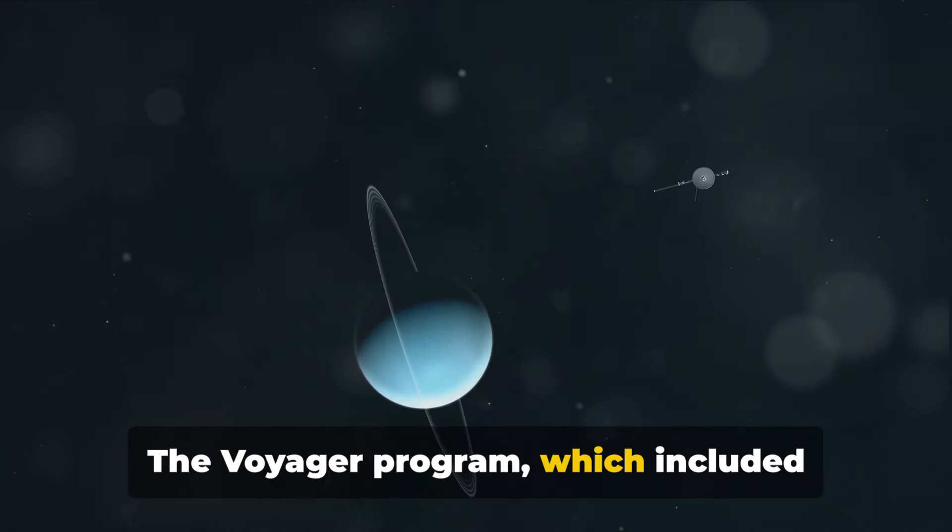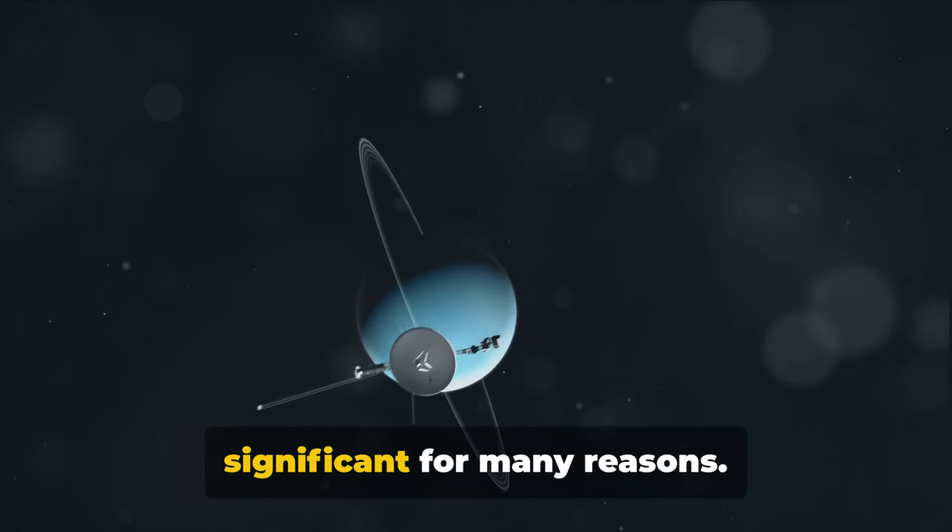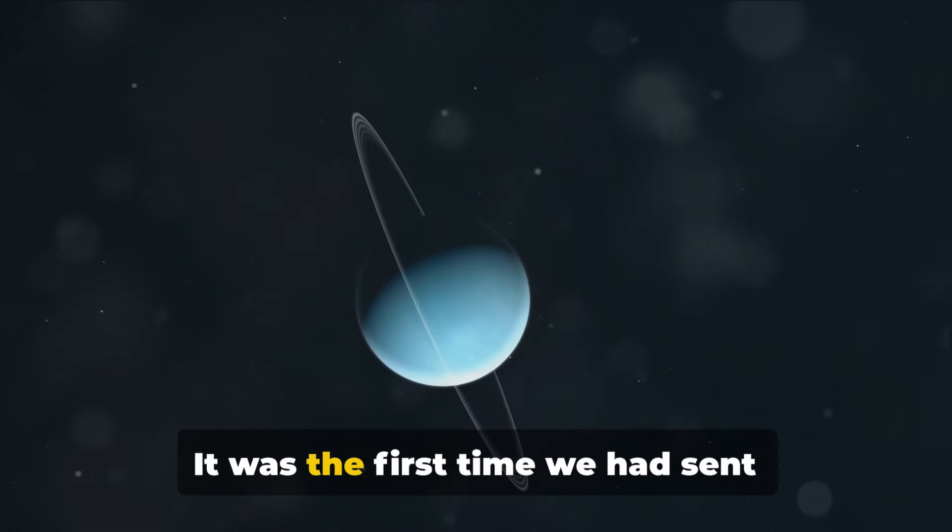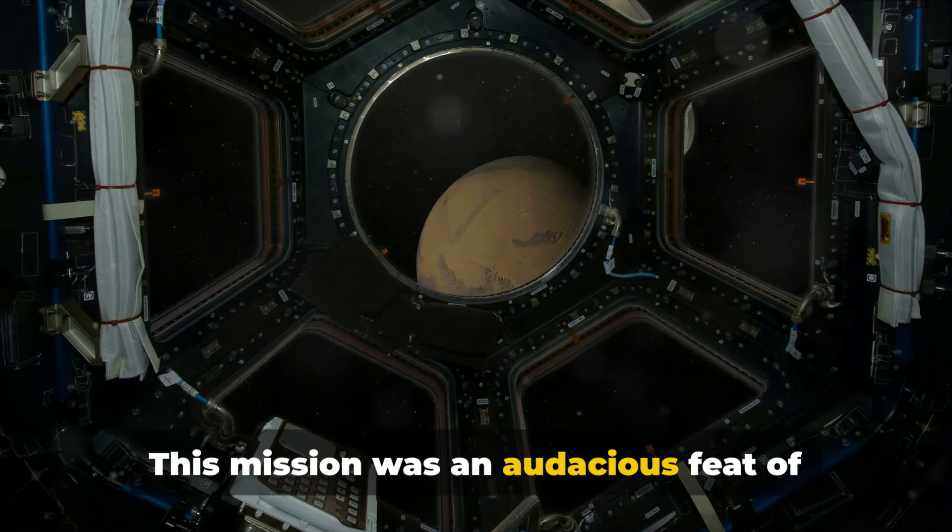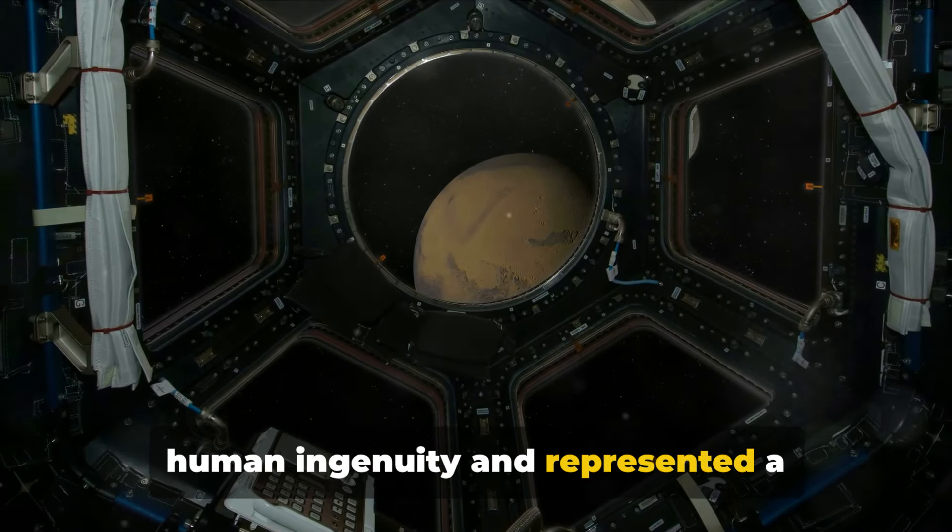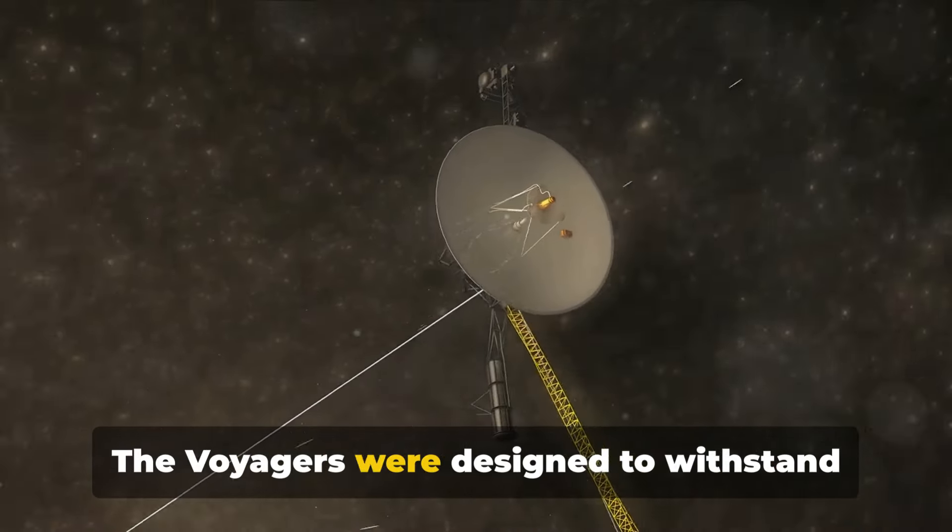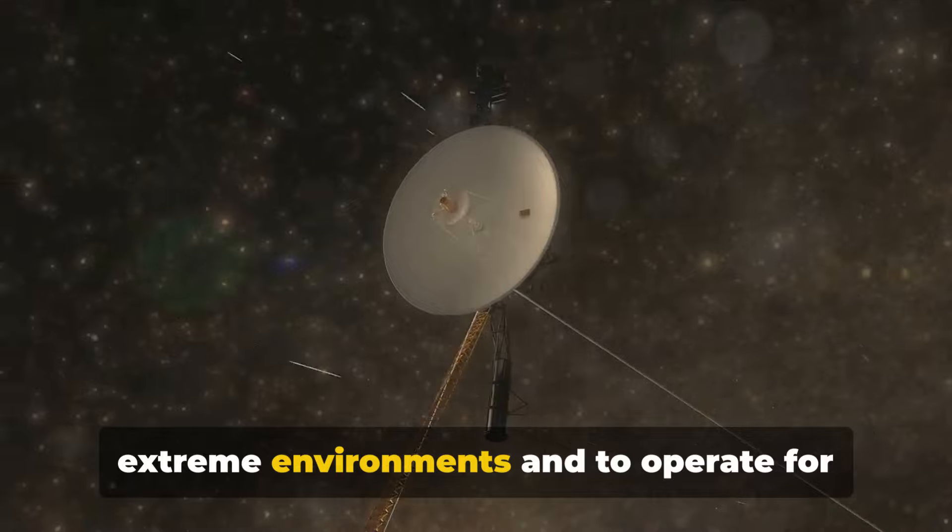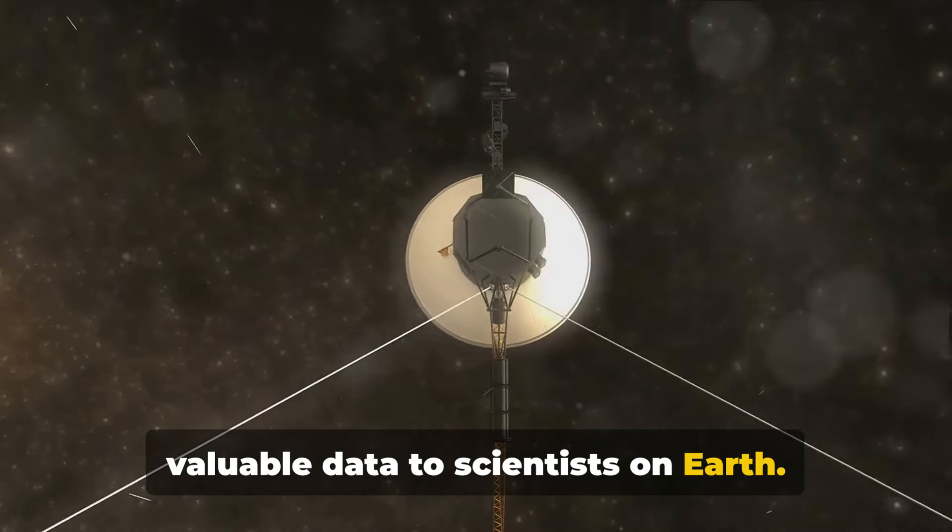The Voyager program, which included Voyager 1 and its twin, Voyager 2, was significant for many reasons. It was the first time we had sent spacecraft on a mission to the outer planets. The Voyagers were designed to withstand extreme environments and to operate for years on end, all while beaming back valuable data to scientists on Earth.